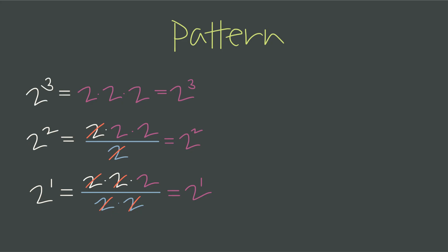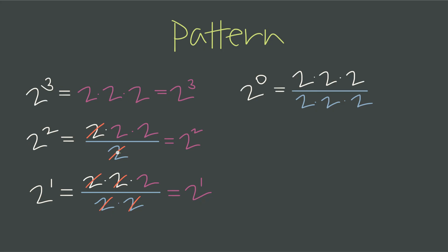Here's where the pattern starts to prove our point about negative exponents. If we write 2 to the 0, you can see that what we're doing is dividing by one additional factor of 2 each time we step down the exponent. Here we divided by 0 factors of 2, then 1 factor, then 2 factors — and now we have 3 factors of 2 in the denominator. The result of this fraction when all the factors cancel is 1.